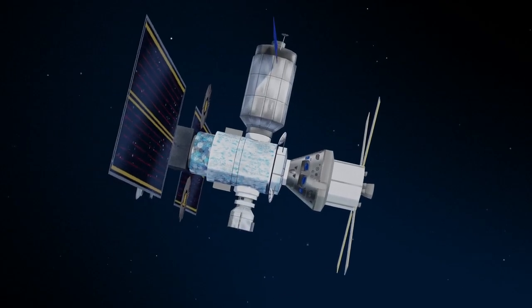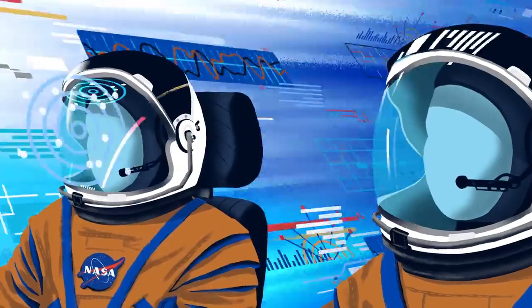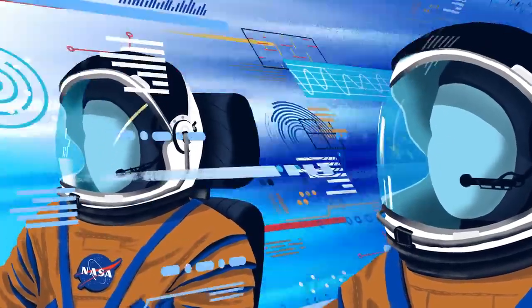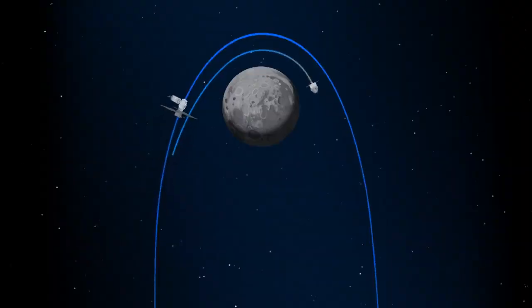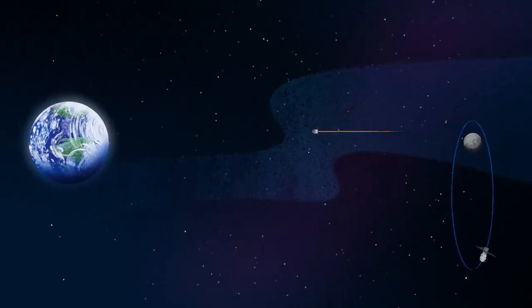Once back aboard the Orion spacecraft and undocked from Gateway, the crew fire their engine once to break out of the halo orbit, and once again to sling the spacecraft around the Moon, placing it on a multi-day trajectory back towards Earth.